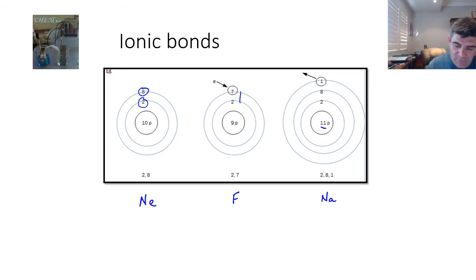Fluorine has a very high electronegativity. That is, it exerts quite a significant force on an electron attracting it into this outer shell. Sodium, on the other hand, has a very low electronegativity. As a consequence, its attraction for this particular electron is very low.